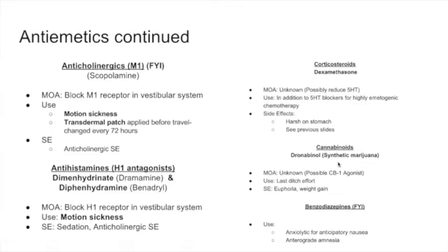The next class of antiemetics is cannabinoids. Dronabinol is a synthetic form of marijuana. It is not really known how it works for nausea and vomiting, but it does work. It is really used as a last-ditch effort or last line of therapy for patients. Side effects include euphoria and weight gain.